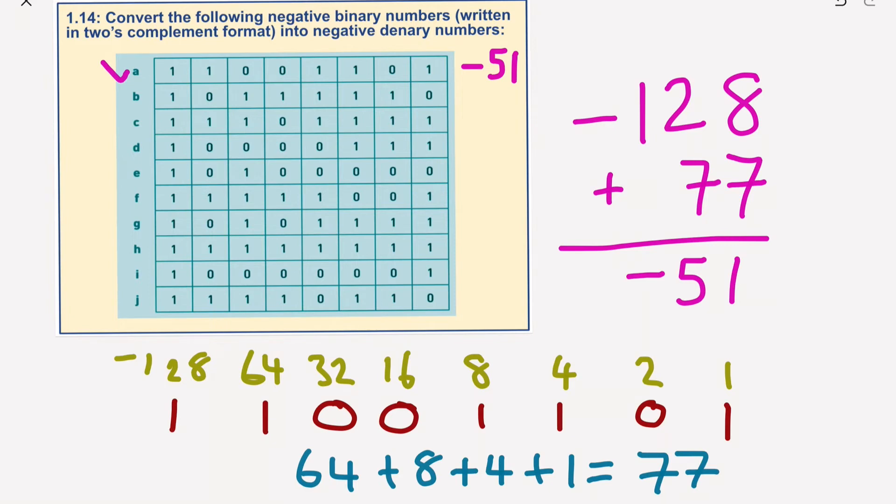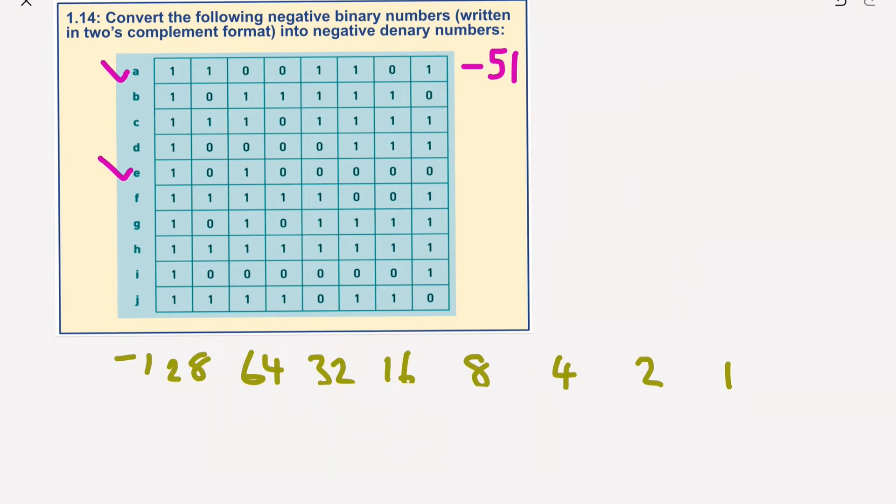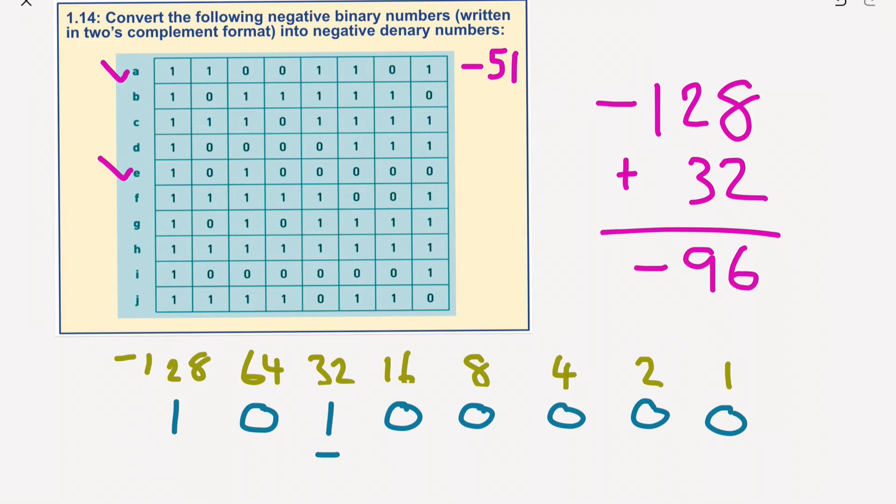Let's do E. So rub this out and for E we have 1, 0, 1, 0, 0, 0, 0, 0. So we've got to take that into account. I'm going to go minus 128 plus 32, which would give us a number of negative 96.